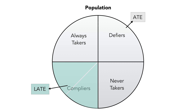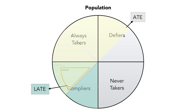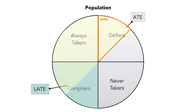Another way we can split up the population is according to whether people were treated or not. The never takers are never going to be treated, so they're definitely not treated. The always takers are always treated. Some of the compliers get treated and some of the defiers get treated. So our population is split in half — these are the treated, and these people are the untreated. The compliers who were treated are the people who were assigned to treatment, and the compliers who were untreated were assigned not to be treated. Conversely, for the defiers, those who got treated were the ones not assigned to be treated, and those not treated were the ones assigned to treatment but defied. Taking the average unit level causal effect for all of the treated people gives us the average treatment on the treated.